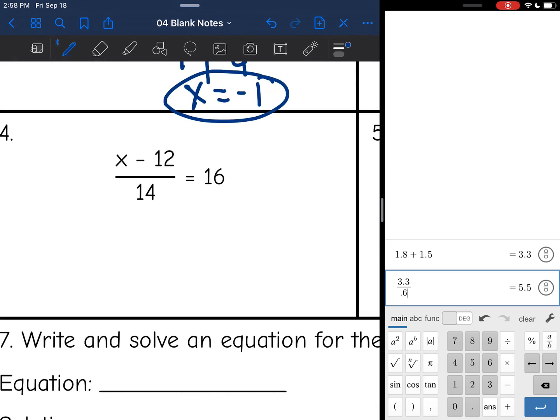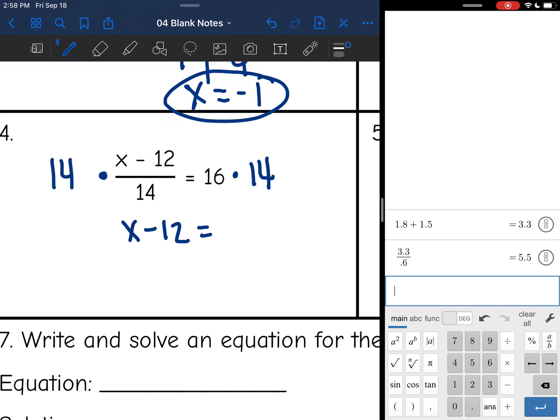Okay, number 4. This is one of the special cases that I was talking about. This whole side is being divided by 14, so that is what I want to undo first. Whenever you have a whole entire side that is in fraction form, you want to get it out of fraction form. So that whole side is being divided by 14. I'm going to multiply by 14 to undo it. And then I get x minus 12 equals 16 times 14 is 224.